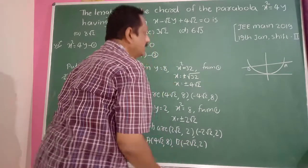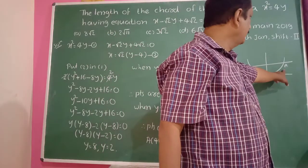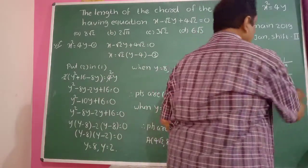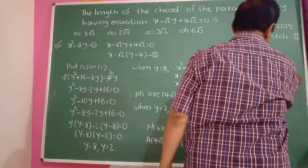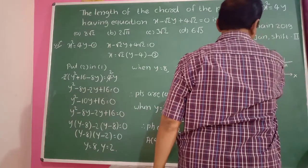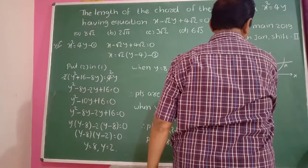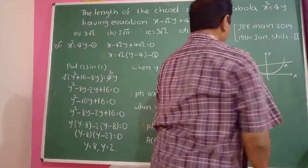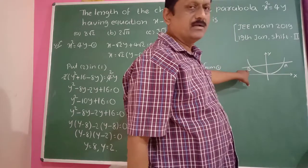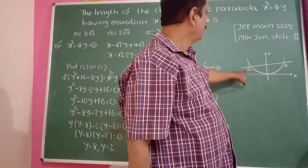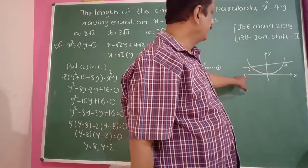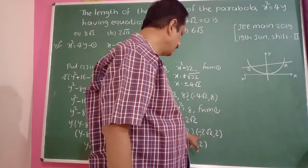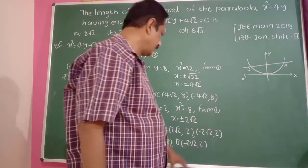Point A is in the first quadrant where both x and y are positive. The coordinate of B is in the second quadrant where x is negative and y is positive, therefore B is (−2√2, 2).